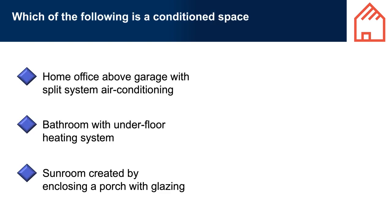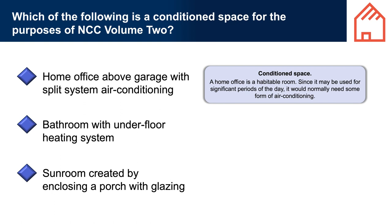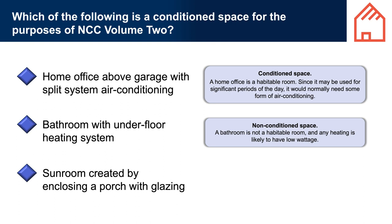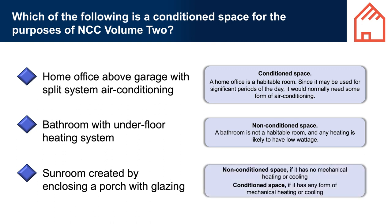Regarding conditioned spaces: a home office above a garage with a split system air conditioner is a conditioned space, as a home office is a habitable room that may be used for significant periods of the day. A bathroom with underfloor heating is a non-conditioned space — a bathroom is not a habitable room per the NCC definition, and the heating load should be below the 1.2 kilowatt threshold in the conditioned space definition. A sunroom created by enclosing a porch with glazing is a non-conditioned space if it has no mechanical heating or only a small heater, but is a conditioned space if a heater of sufficient power has been installed.